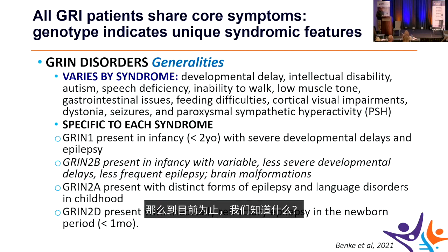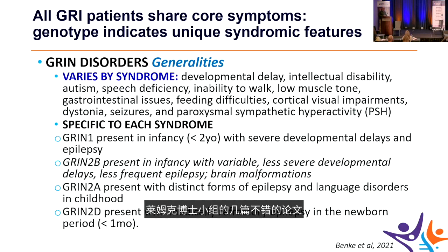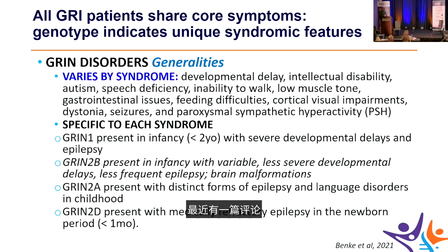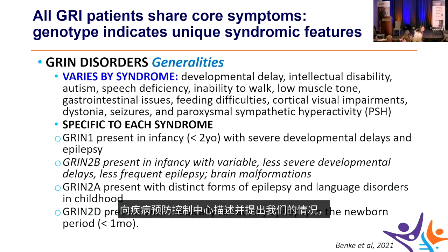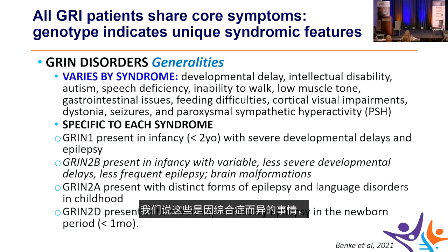A recent review synthesized findings across GRIN syndromes. The general case made to the CDC for separate ICD codes rests on each syndrome being unique: they differ in developmental delay, intellectual disability, autism presentation, speech issues, gross and fine motor function, seizures, dystonia, and autonomic storms.